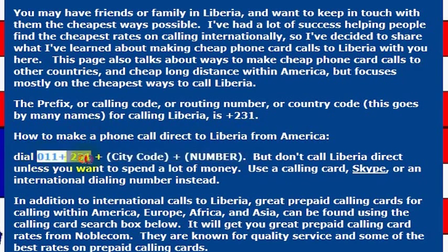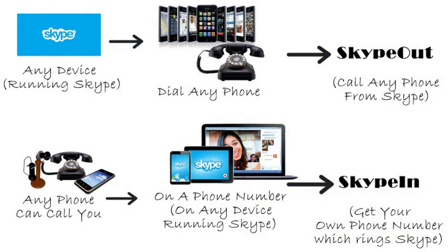So that's 011, then 231, the international country code for Liberia. That said, I wouldn't really recommend calling direct — your phone company will charge you a lot of money. If you want to call a phone number, I really recommend using Skype.